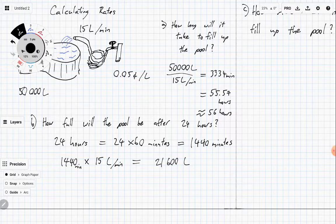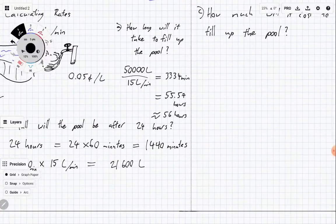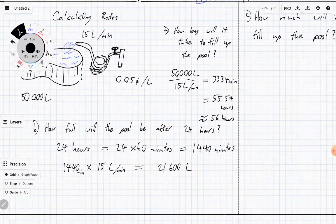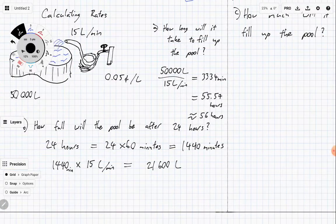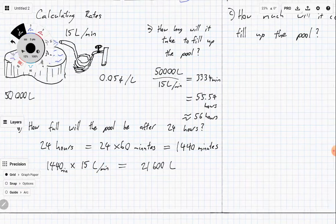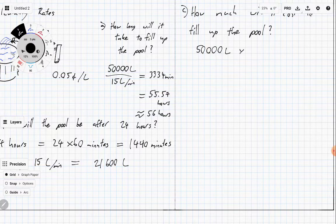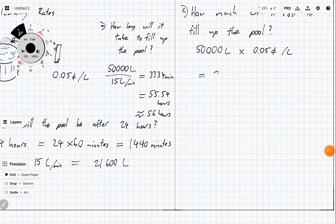Last question. How much will it cost to fill up the pool? Well, if each liter costs us 0.05 cents, then it's going to cost us just a little bit. So if we've got 50,000 liters, and each liter is going to cost us 0.05 cents per liter, we're going to multiply these two together, and we're going to get 2,500 cents.